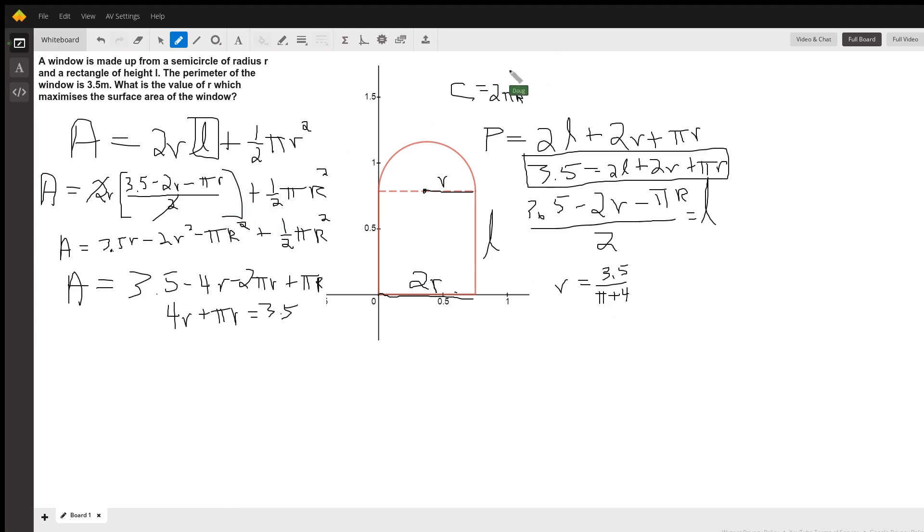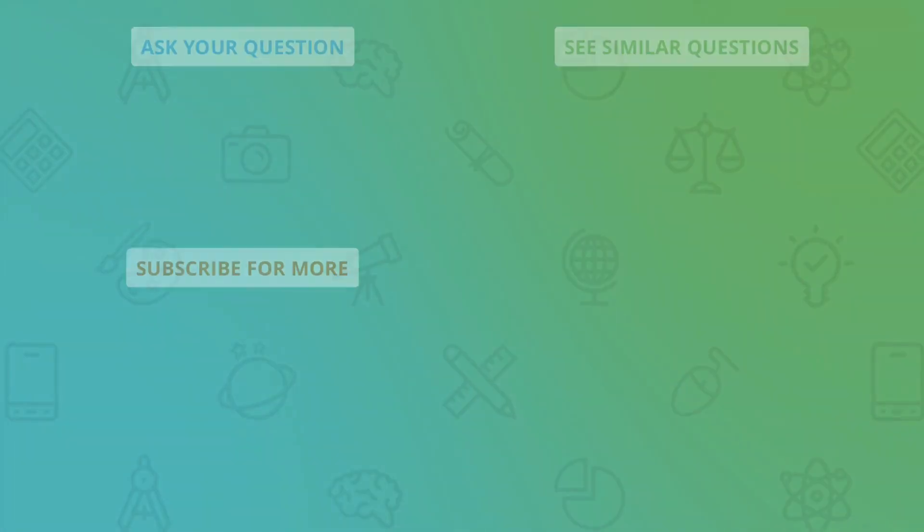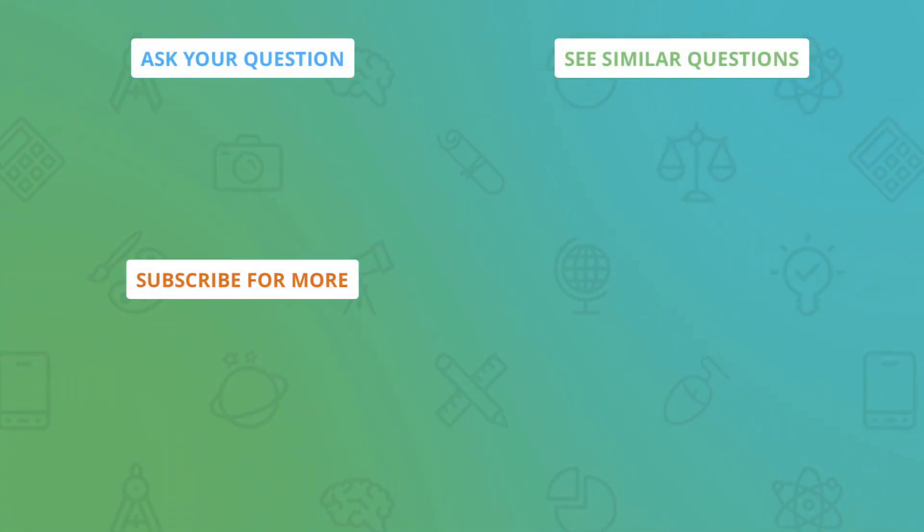And I will send a link to the Desmos graph so you can check out a table that shows that this does indeed look like the maximum value for the area of that window in meters. There you go. Hope that helped. If you have any questions, post a comment.